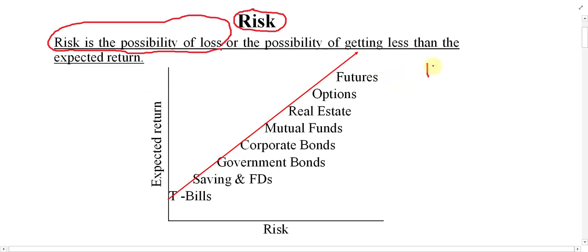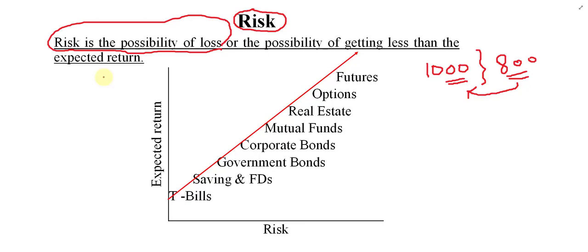For example, if I have invested somewhere and I expect to make one thousand profit, but due to any reason or any factor or any problem, it is possible to have a profit of less than one thousand — say eight hundred instead of one thousand — so the possibility of getting less than expected return is also called risk.